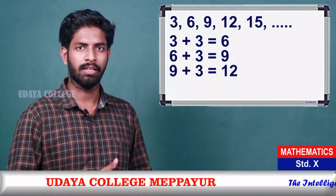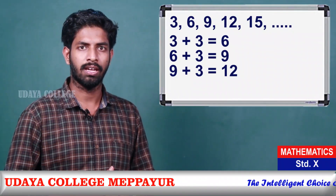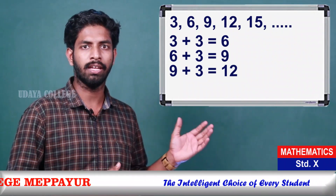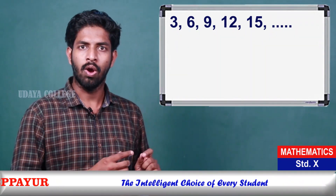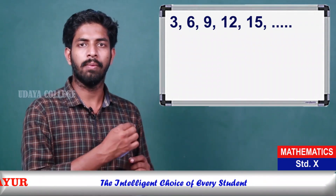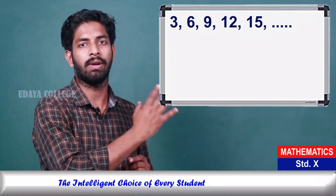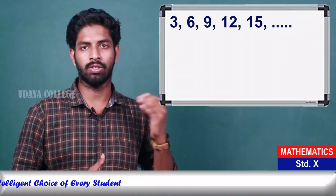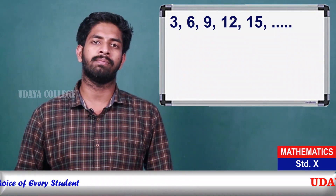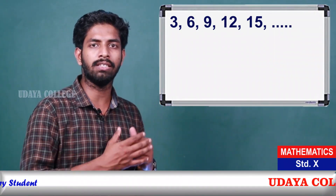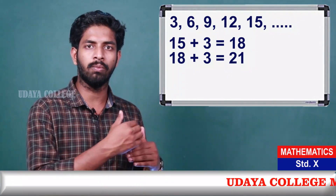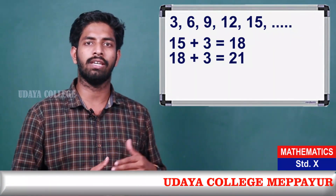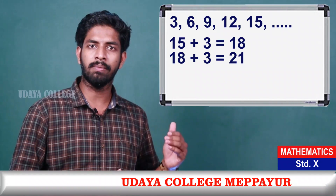Starting from 3, we add 3 each time: 3, 6, 9, 12, and so on. Then I get that next number. That number is 15. So the next number is 15. And 18 plus three is 21.